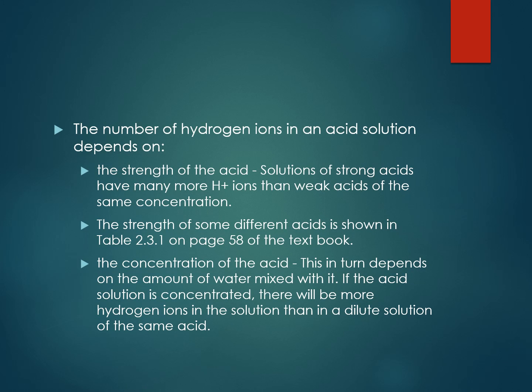The number of hydrogen ions in an acid solution depends on the strength of the acid — we've talked about strong and weak acids — and also on the concentration of the acid. So if you dilute the acid a lot, it won't be as strong as one that is very concentrated.